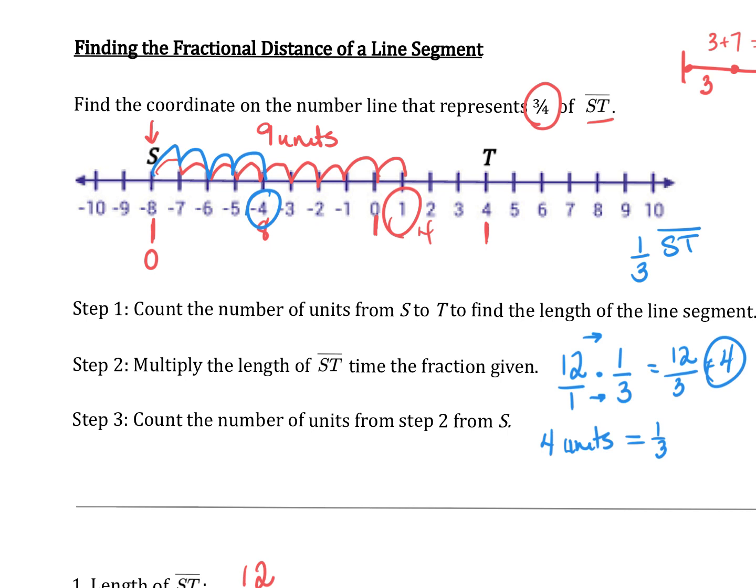Now, if it had asked for 1 third of the segment TS, you'll notice T is listed first. So then that changes our coordinate. It doesn't change how many units 1 third of the segment represents, but it changes from which direction we start counting. So since T is listed first, we're going to start counting our 4 units from 4.